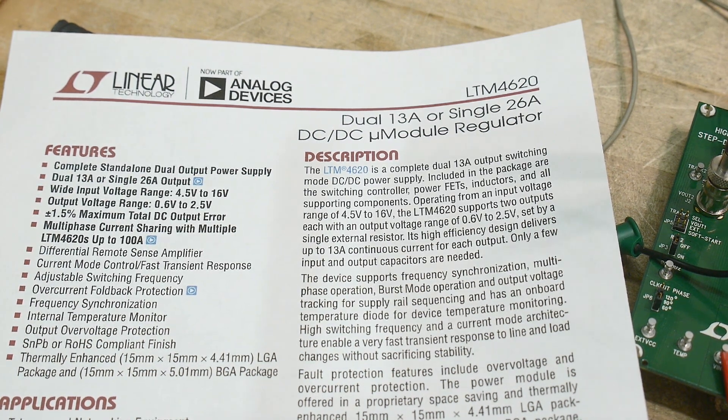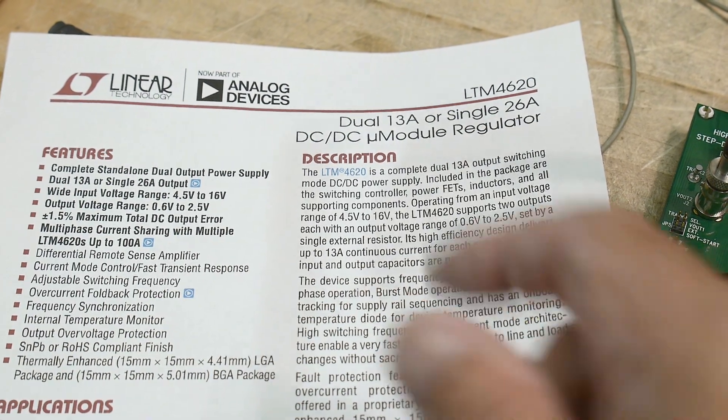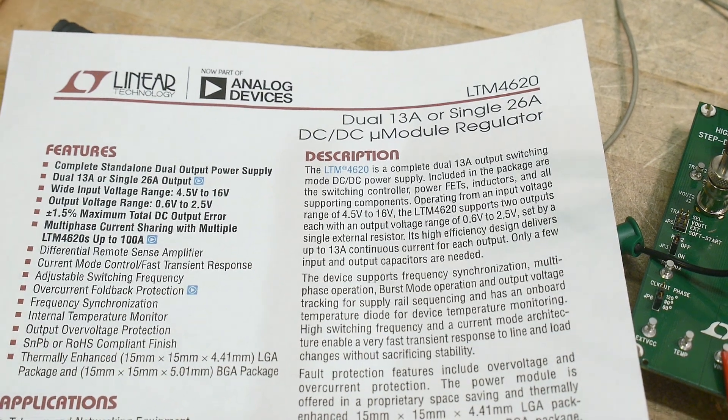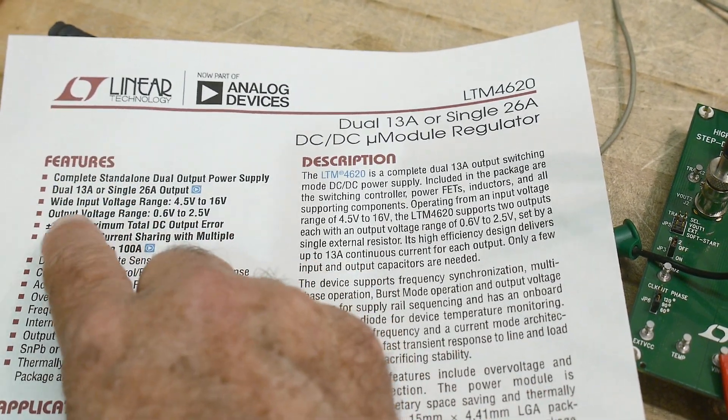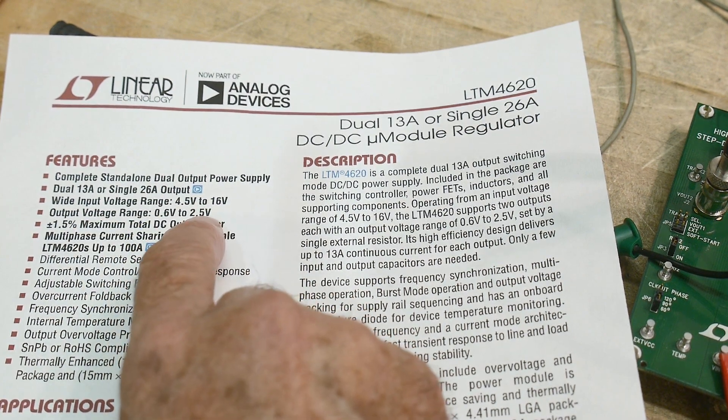Easy comes at cost. So this is like a $75 part. Yep, 75 smackaroos. For 26 amps though, that's pretty good. Let's see here. Input is 4.6 to 16. Output is 0.6 to 2.5.